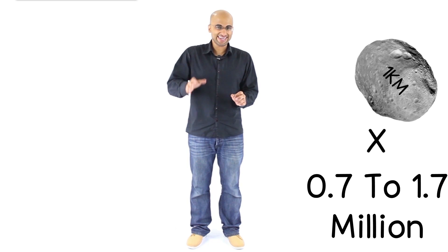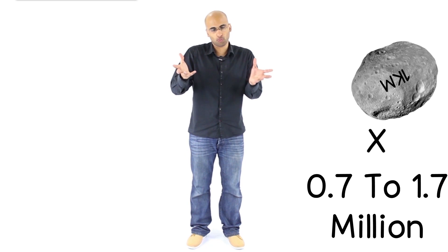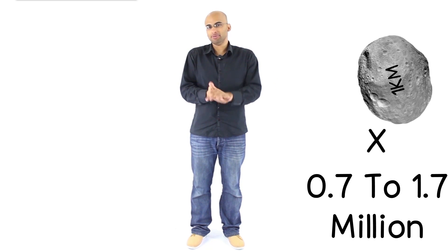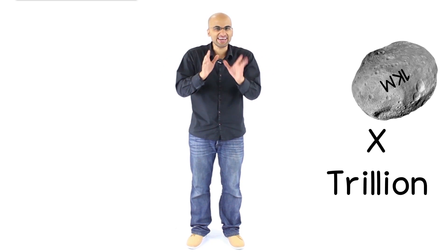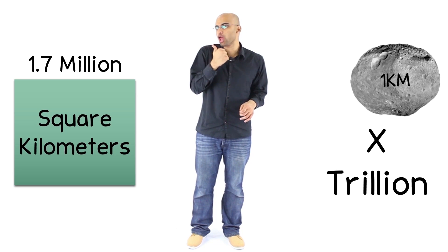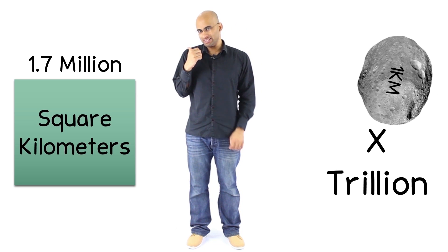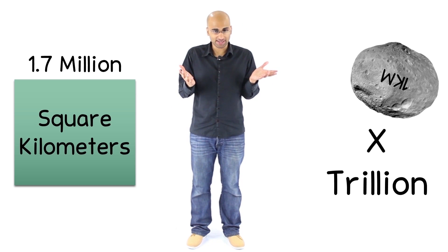You see, the asteroid belt has about one million asteroids each with about something like one kilometer in diameter. But even if you had one trillion of those, not one million, one trillion, each one will get about this many square kilometers all for itself. But why are we talking here in square kilometers?